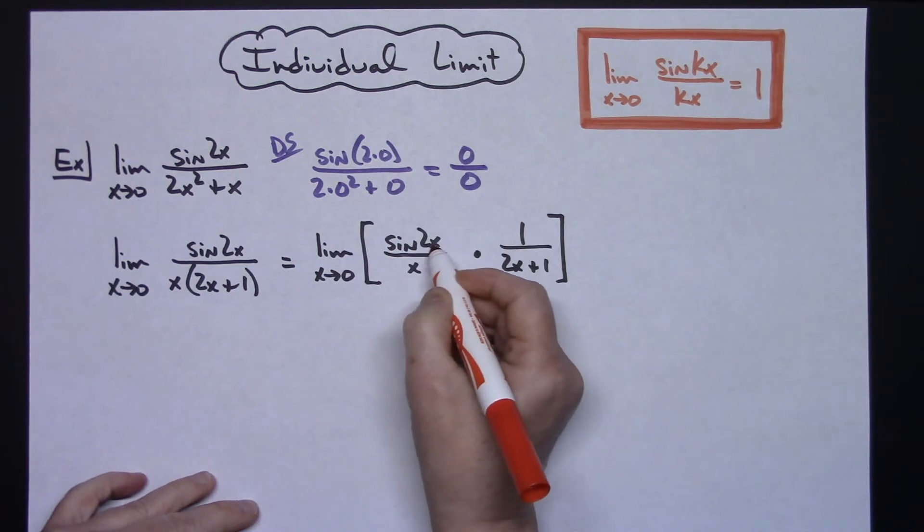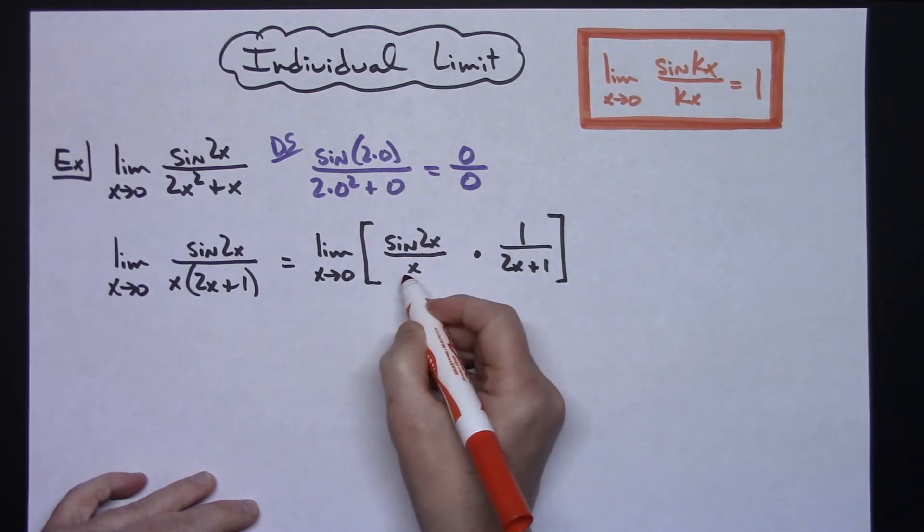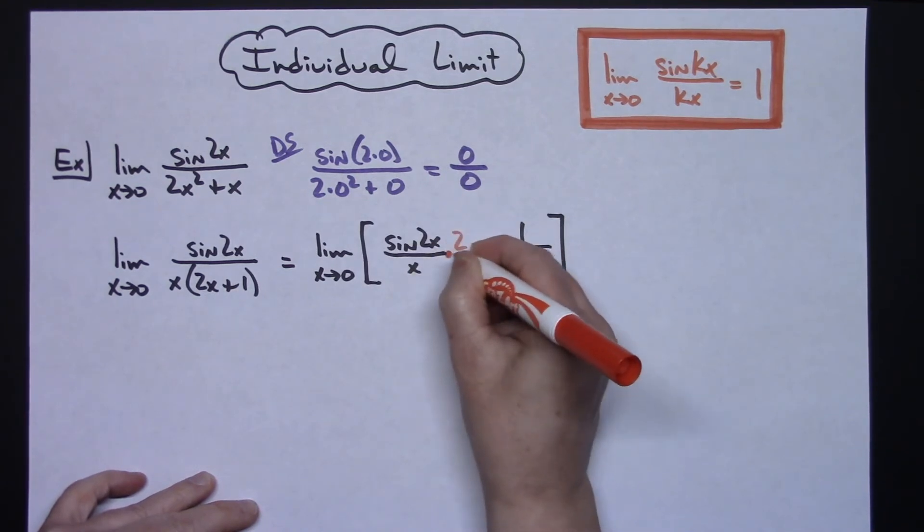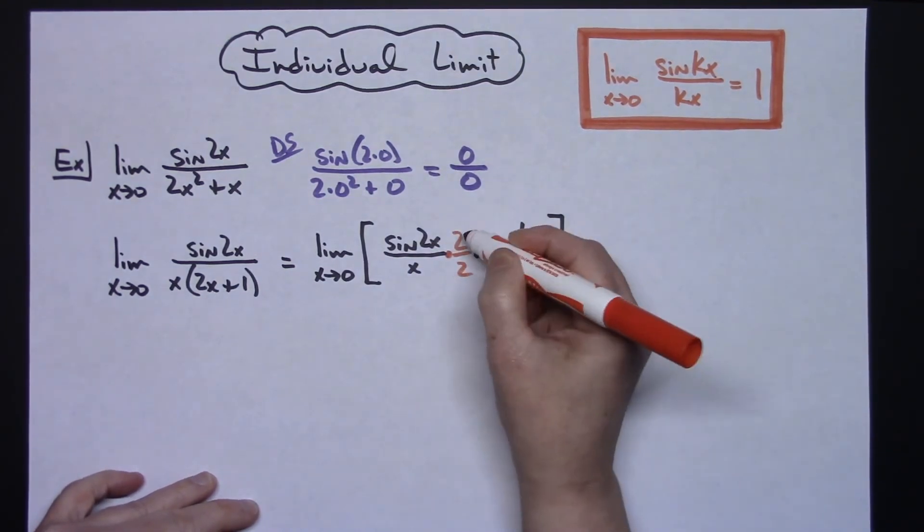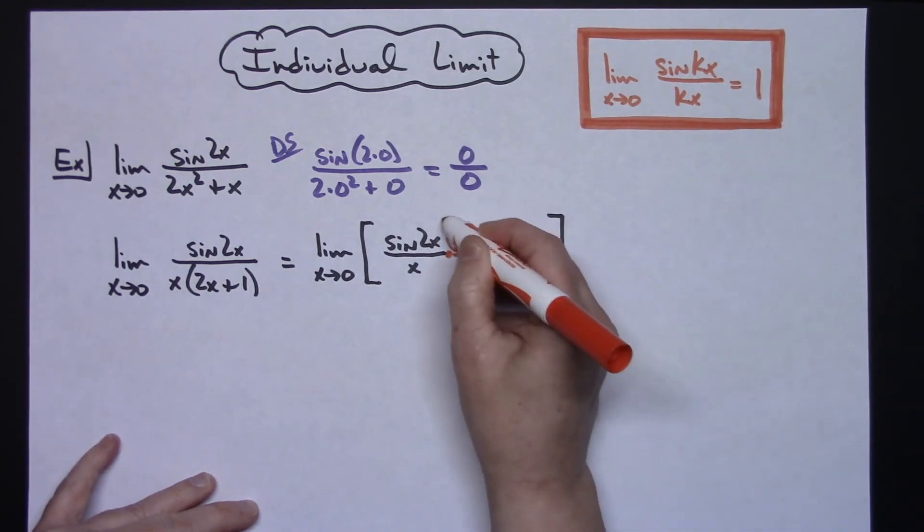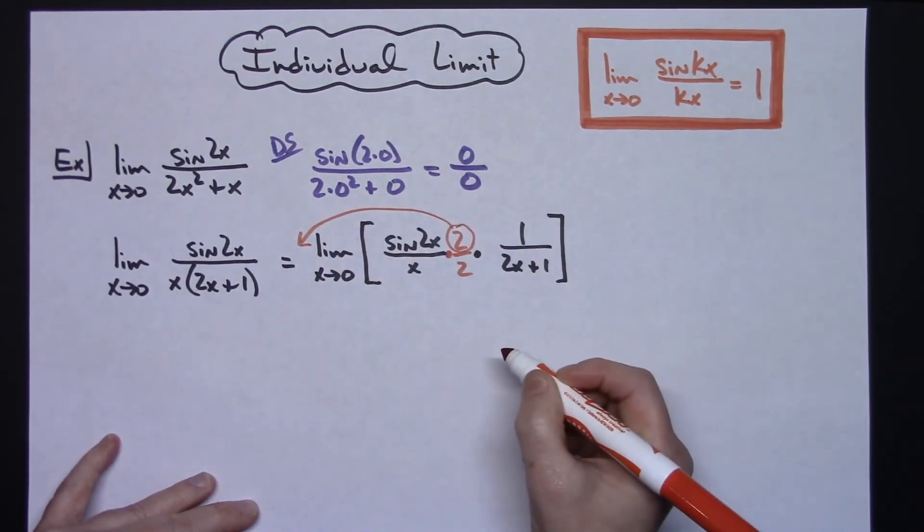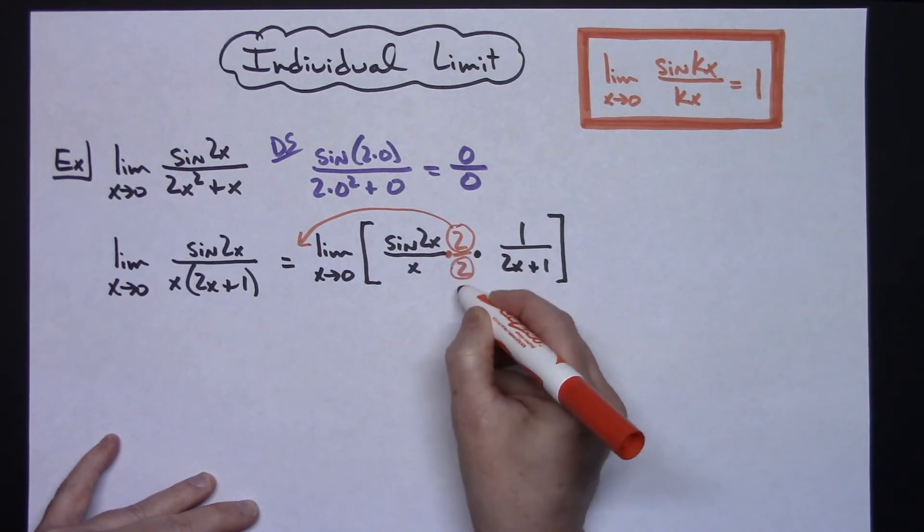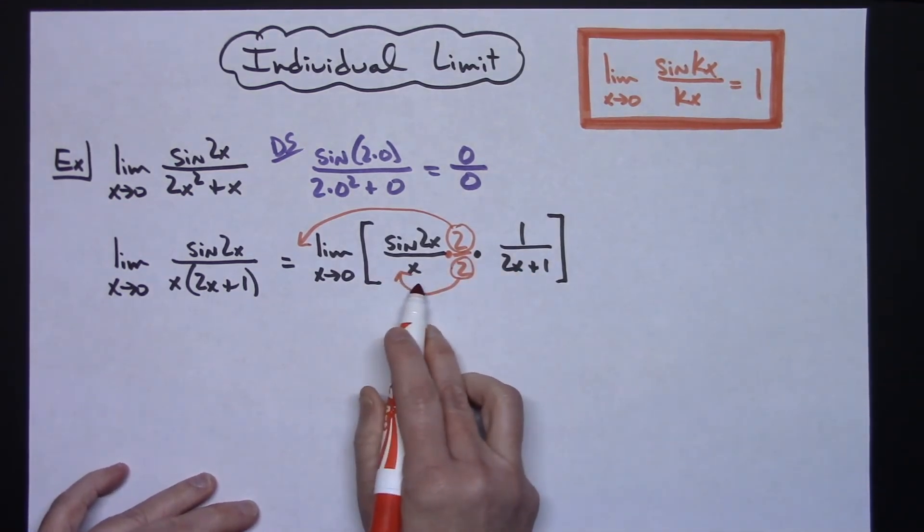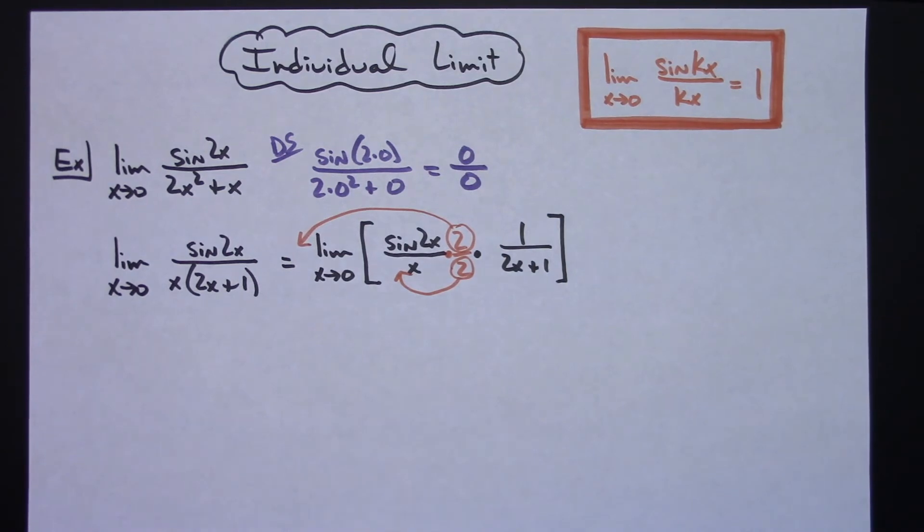Now what's going to happen is this 2 on top is left over. I don't need it, so I'm going to pull it outside my limit. And this 2 right here is going to be placed right in front there so that I have an actual 2x right there. Now let's go ahead and rewrite that expression. I'm going to have the 2 out in front and then I'm going to have the limit as x approaches 0. I now have the sine of 2x over the 2x times the 1 over the 2x plus 1.